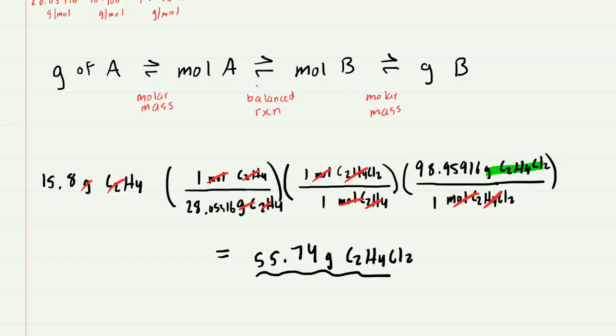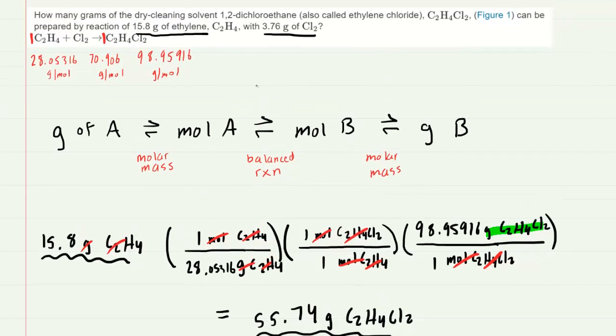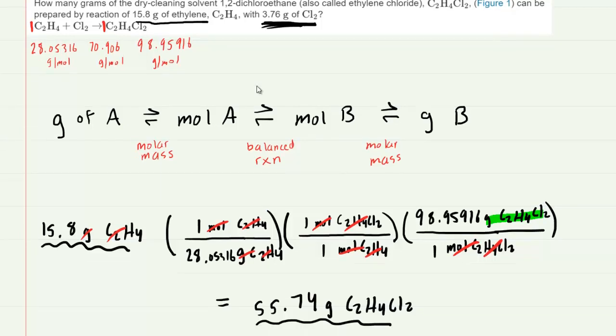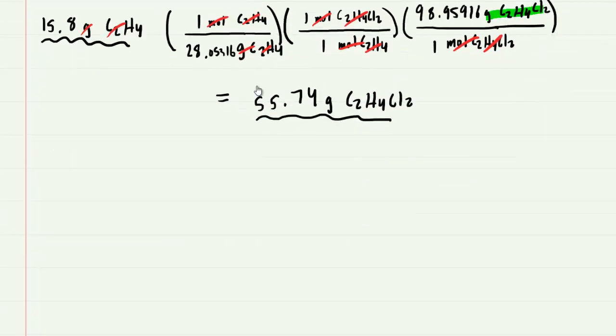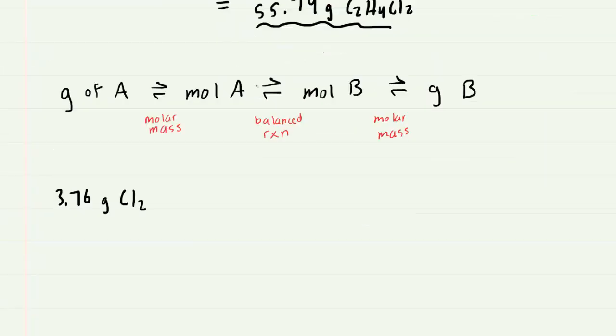So this is how many grams of the product we would expect to be formed when we react 15.8 grams of C2H4. But we're not done with the problem because we have another number of grams of the other reactant, the Cl2. So we're going to set up a similar calculation string following the roadmap to get the number of grams of our product. Remember, you're starting with 3.76 grams of Cl2.